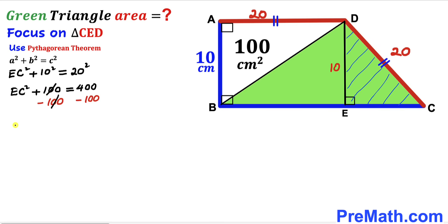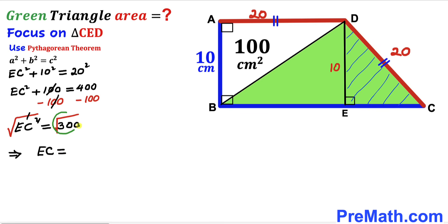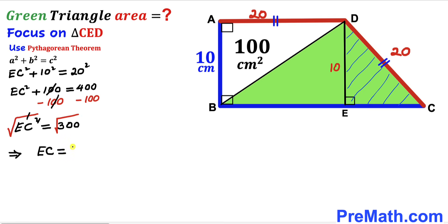Subtracting 100 from both sides, CE² equals 400 minus 100, which is 300. Taking the square root of both sides, CE equals √300. We can write √300 as √100 × √3, and since √100 equals 10, CE equals 10√3 centimeters.